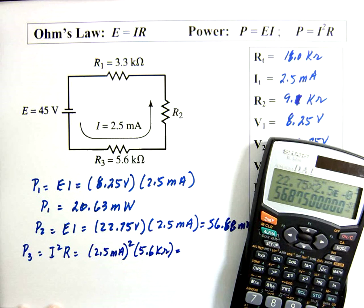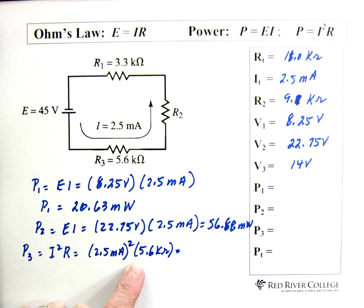So in this case we take 2.5 exponent negative three and then we square it, and that's multiplied by 5.6 exponent 3 equals. And we have 35 milliwatts.